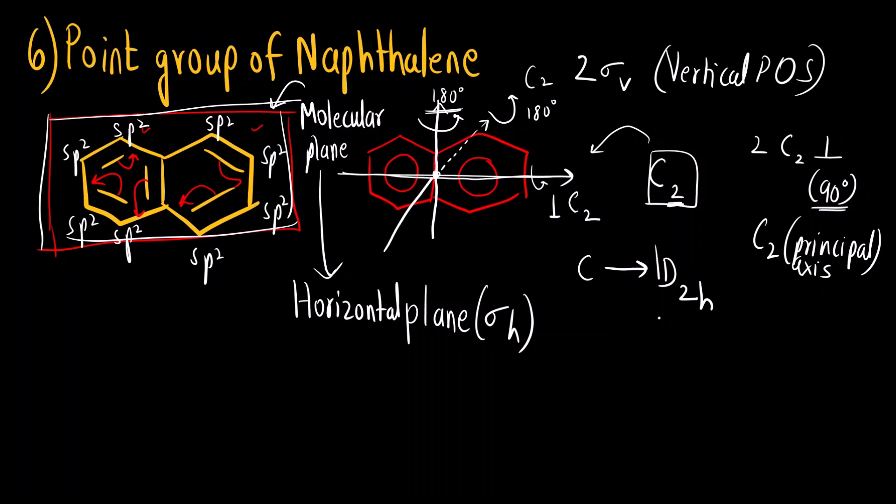So what will be the point group for this question? The correct answer will be D₂h. The point group of naphthalene is D₂h. I hope you have understood all these questions. We will continue the video further and we will solve some more questions. Thank you so much.